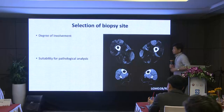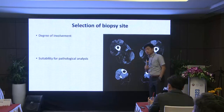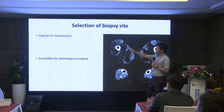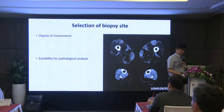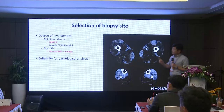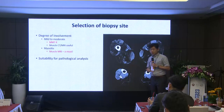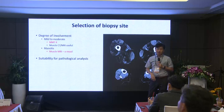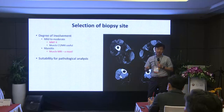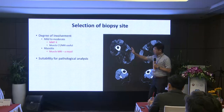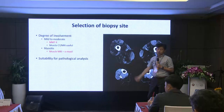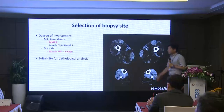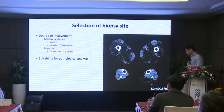Another important point before doing muscle biopsy: you have to carefully choose the biopsy site. We should choose a muscle that is mildly to moderately affected — MRC grade 4. If it is really severely affected, what you get will be fat, not muscle. More precisely, performing muscle imaging is highly recommended nowadays.